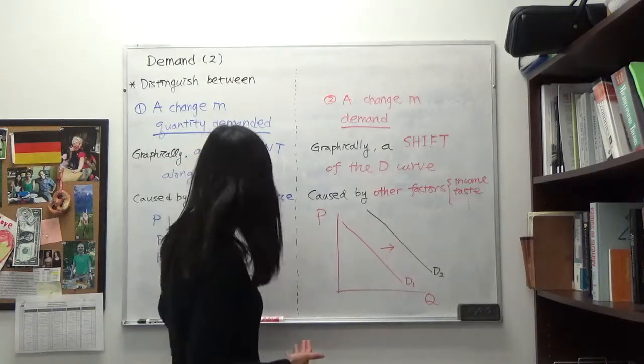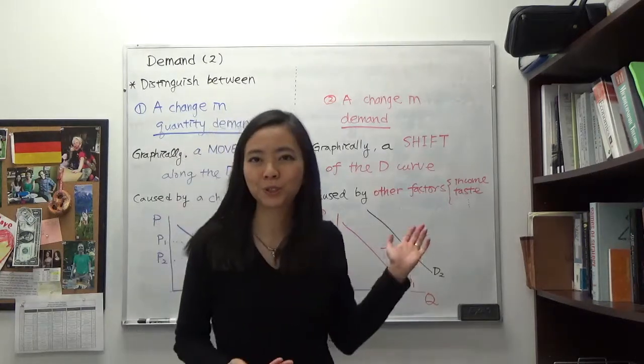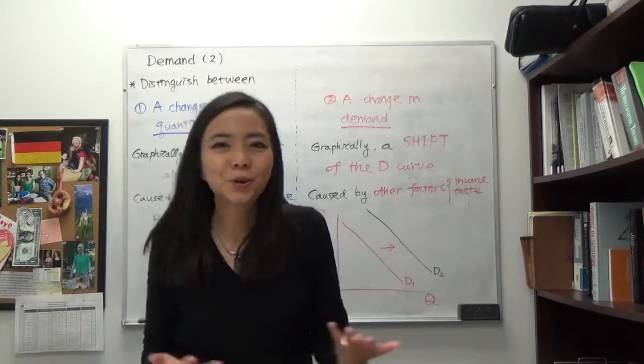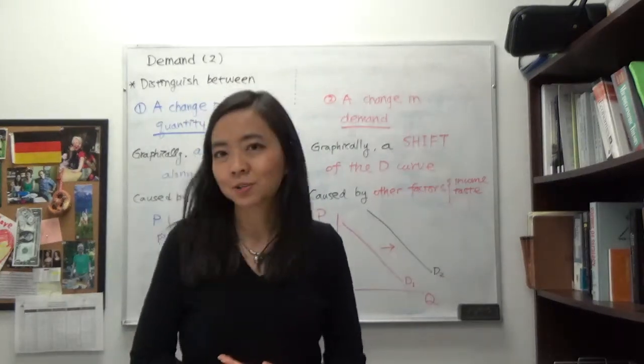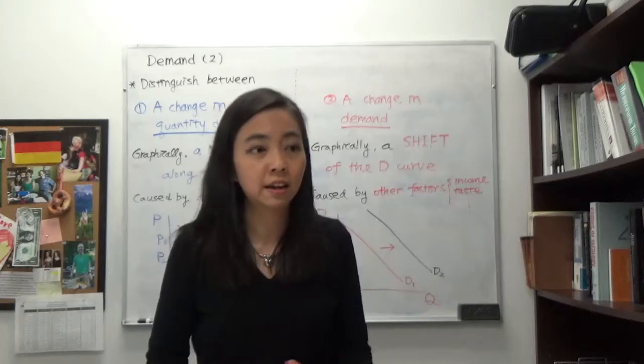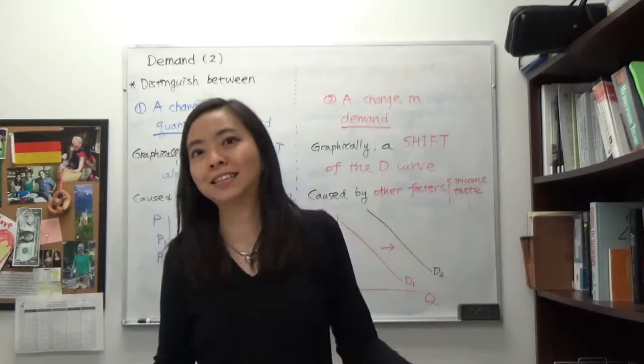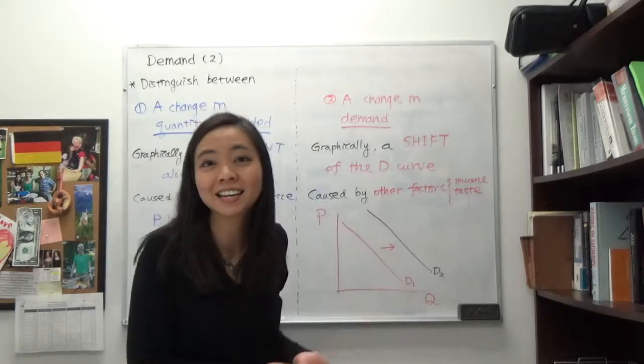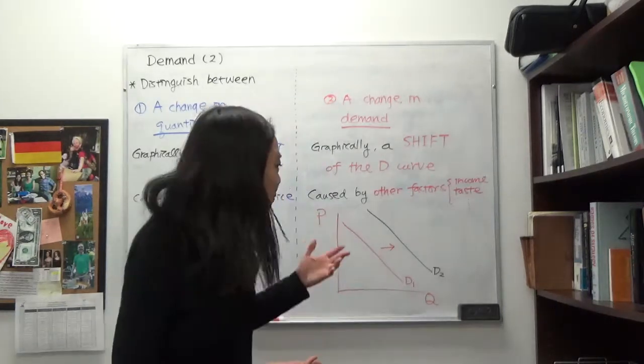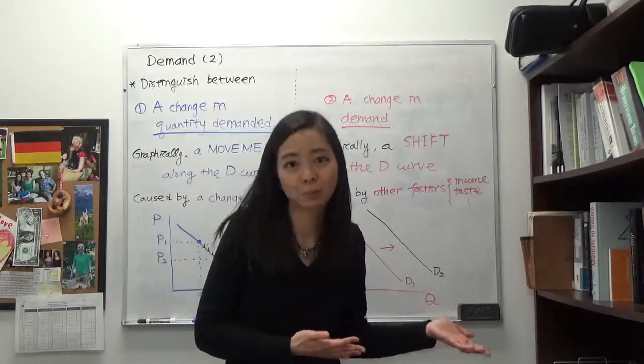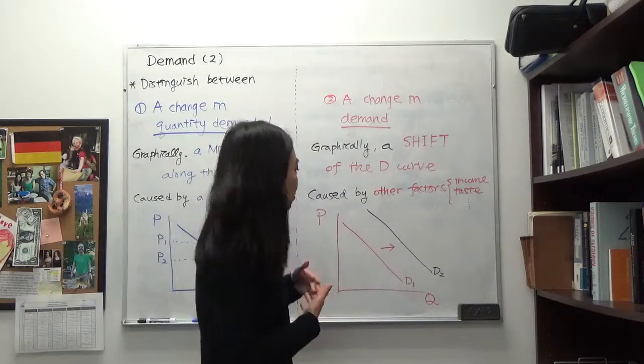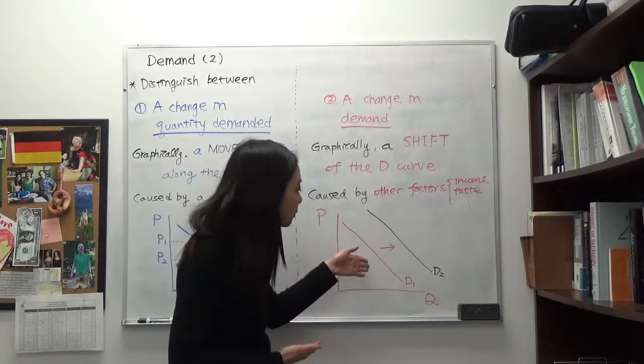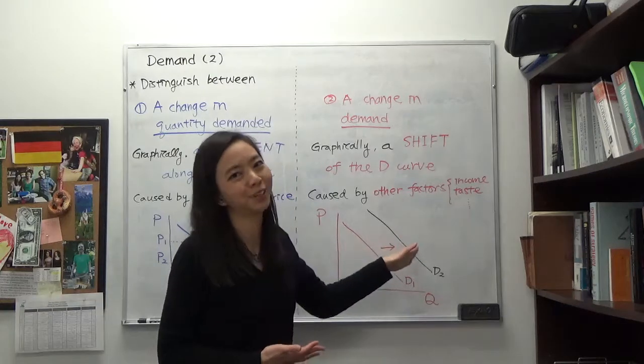So let's go back to our example of cappuccino from Franztown. Suppose all the consumers in Franztown decided they love caffeine, they're all addicted to caffeine, they want to consume more cappuccino. Then we say their taste has changed. So suppose we have a taste for cappuccino, then that's going to increase the demand, and that's going to shift the demand curve to the right.